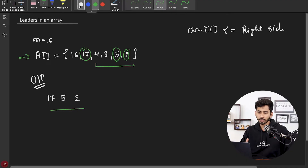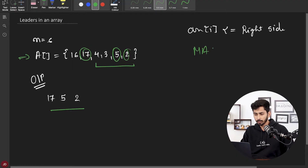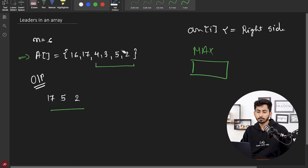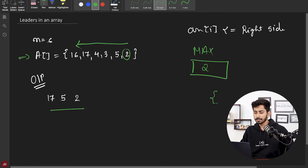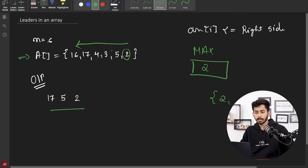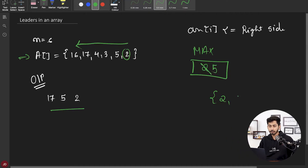To solve this question, the hint is: keep track of a maximum variable and start the traversal of the entire array from right to left. Start the traversal from right to left, initialize the maximum variable as the last element — the last element is always going to be a leader. Whenever you find a maximum element, add it into your list. The next element is 5; is 5 greater than the maximum? Yes, so update maximum and make a note inside your list.